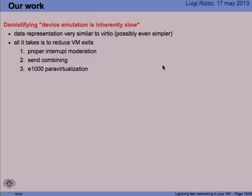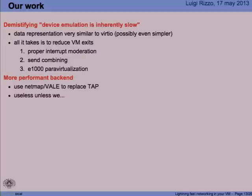The real problem that a para-virtualized device tries to solve is to reduce the number of virtual machine exits, which are related to interrupts and to accesses to I/O registers. So if you have a way to reduce the number of interrupts and replace register accesses with information in shared memory, you can reduce this number of exits and get decent performance even with an emulated E1000 or Realtek or similar device. The second thing we did was improve the throughput of the hypervisor in moving packets between the front-end and the back-end.